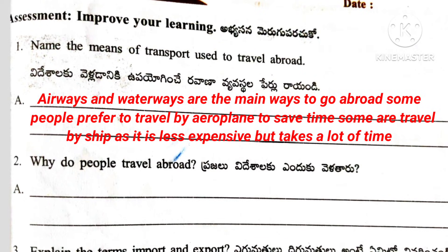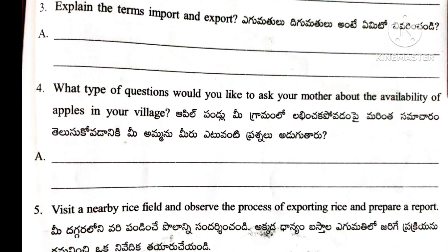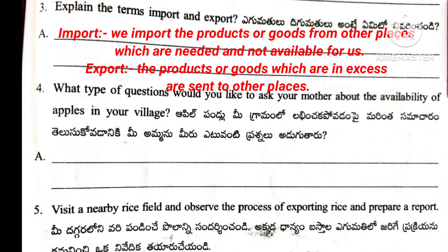Question number 2: Why do people travel abroad? Answer: People travel abroad for different purposes like trade, employment, games, tourism, and higher studies. Question number 3: Explain the terms import and export. Answer: Import — we import products or goods from other places which are needed and not available for us. Export — the products or goods which are in excess are sent to other places.